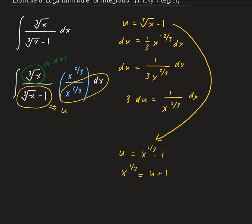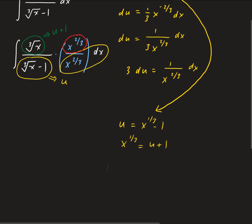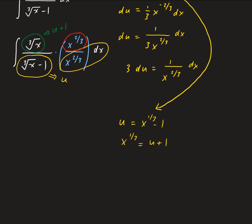What about the x to the 2/3 that remains? We can square both sides of x to the 1/3 equals u plus 1, giving us x to the 2/3 equals u plus 1 squared. So x to the 2/3 gets replaced by (u + 1) squared.